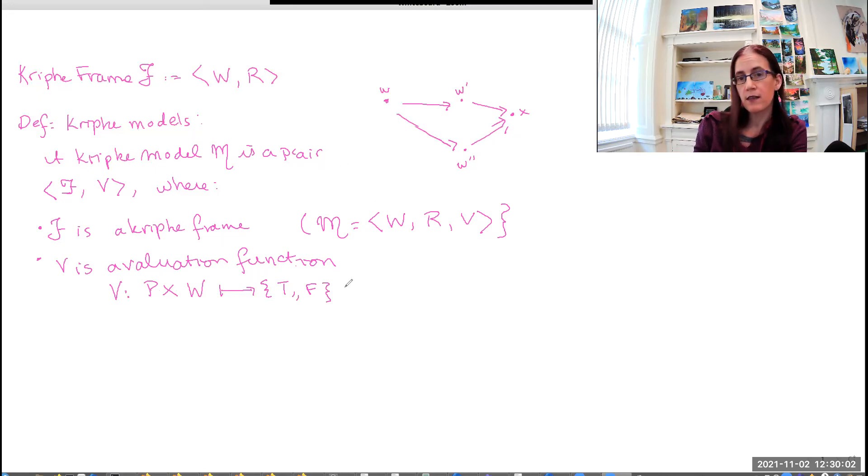However, an easier way of representing this will be in this sort of notation. So we can say that the value of P at world W is true, and the value of Q at world W is false.